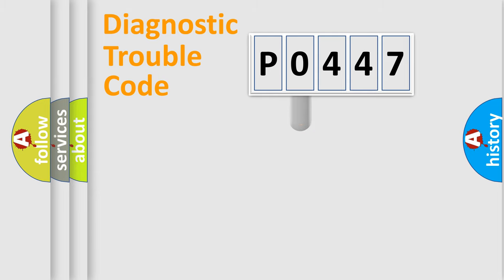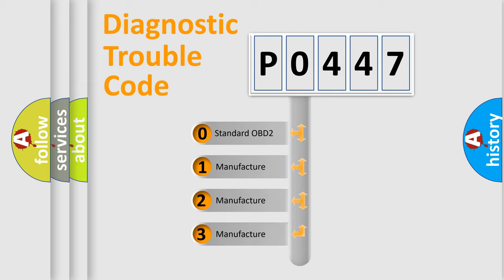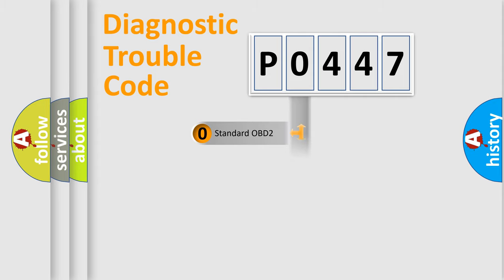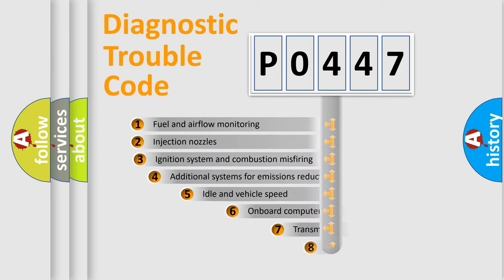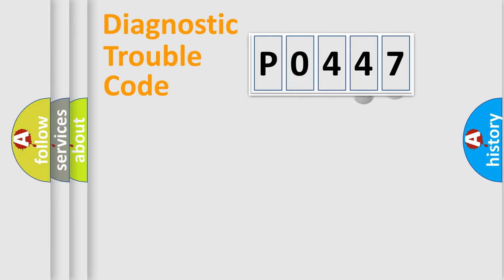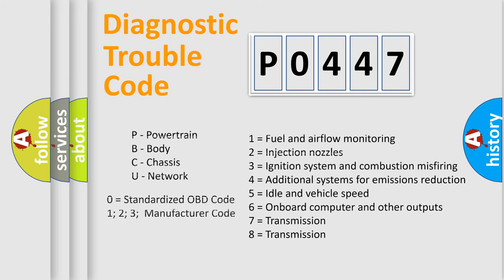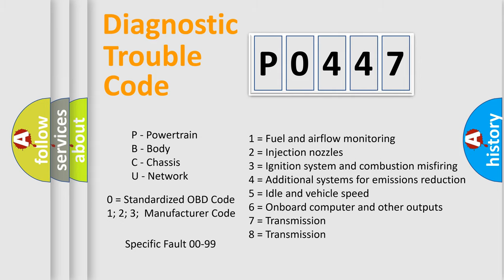This distribution is defined in the first character of the code. If the second character is expressed as zero, it is a standardized error. In the case of numbers 1, 2, or 3, it is a manufacturer-specific error expression. The third character specifies a subset of errors. This distribution is valid only for the standardized DTC code, and the last two characters define the specific fault of the group.